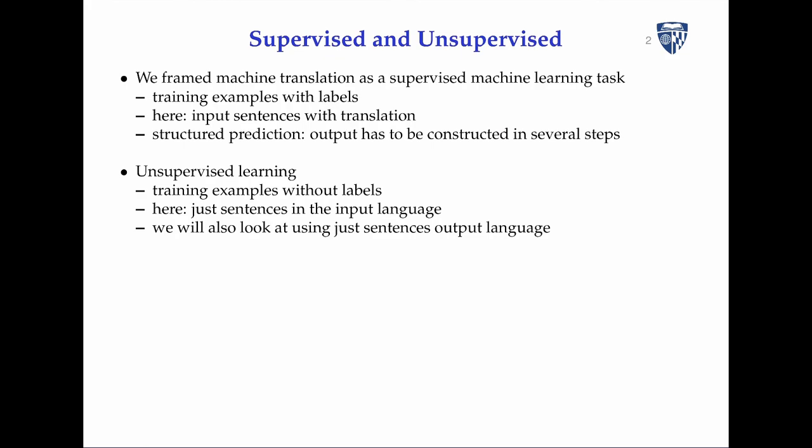In contrast, unsupervised learning means you only have training examples but not any labels. In our case, you would just have sentences in the input language. We will look at what we can do if we only have text in the input language and also if we only have text in the output language.